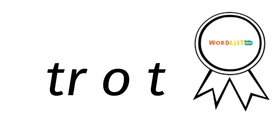Now say the word trot, but take away the first T. What's left? Rot. Now say the word trot and take away the R. What's left? Tot. You can have a tot of orange juice. So there are actually two words within one.